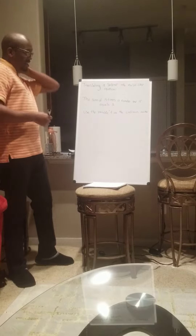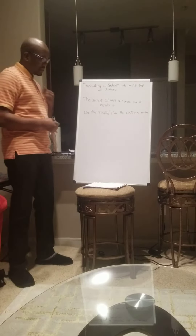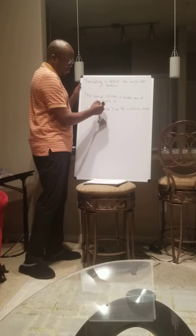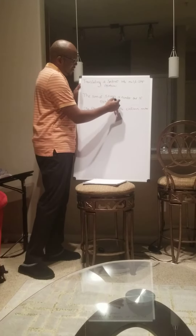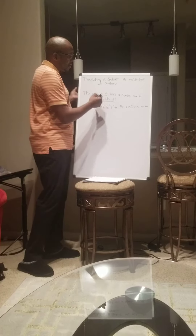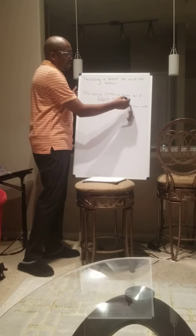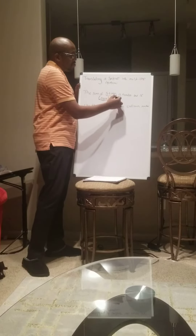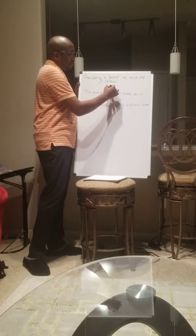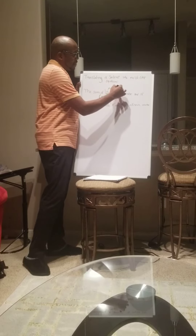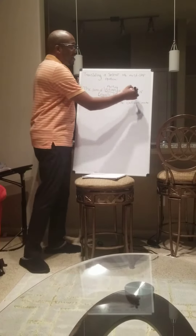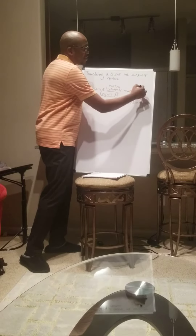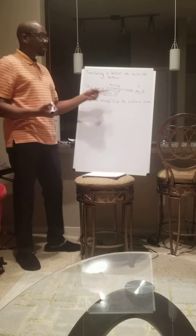First you want to identify what you recognize in here. We recognize keywords: equals, three — you want to pay attention to those. The sum of five times a number and 15. We can understand that five times means we're going to multiply. And 15 — when you think about the sum and 15, it's going to be addition. And it equals three.